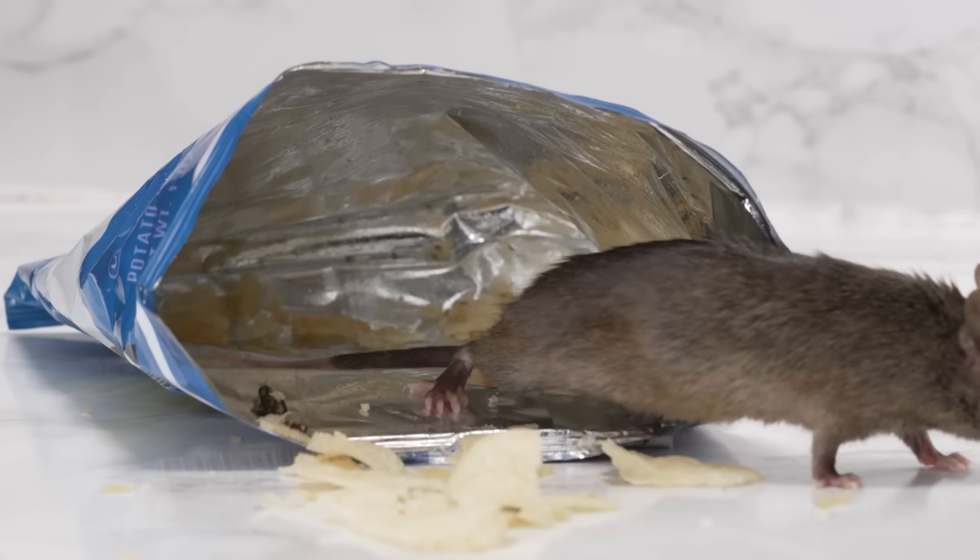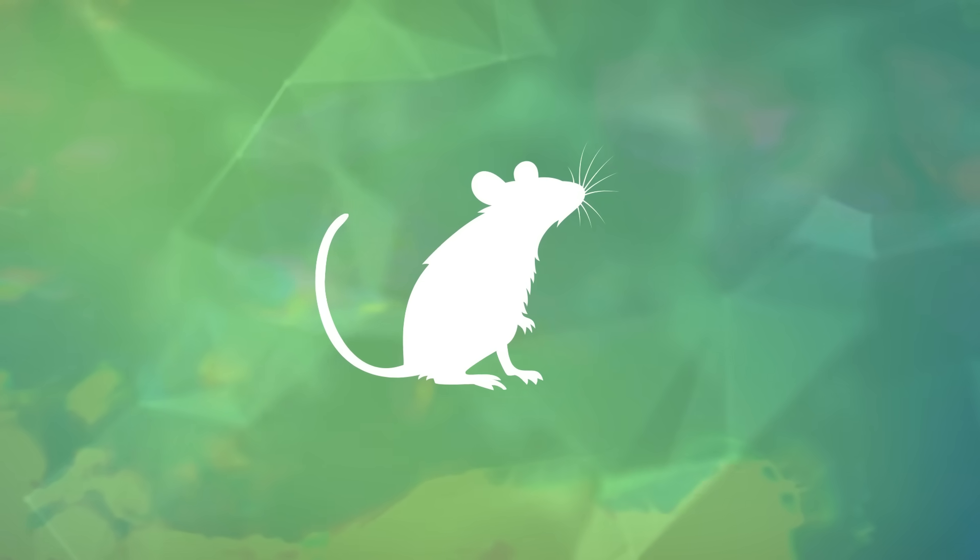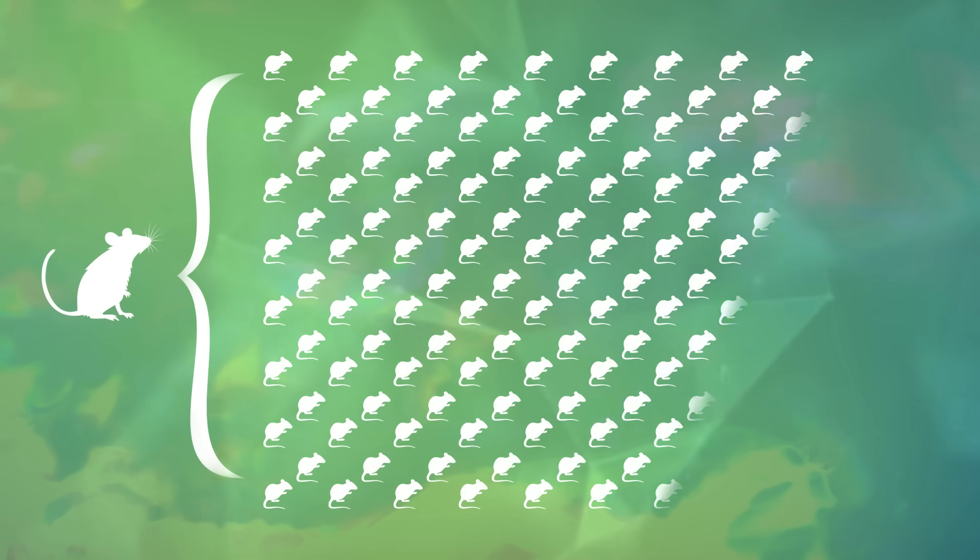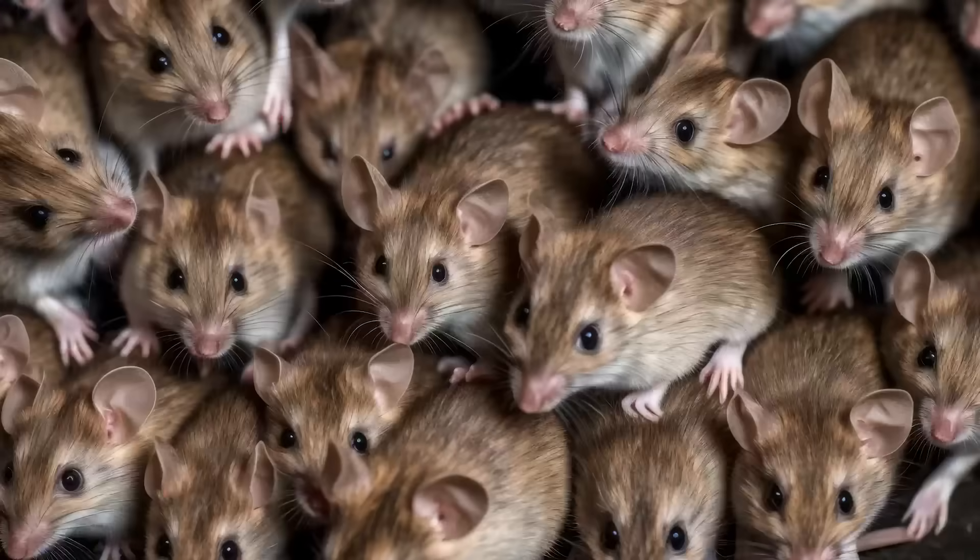House mice are known to produce 40 to 100 droppings in a single day. That's pretty gross. When you think about how a single female mouse can have up to 150 offspring in a year, you can picture just how quickly a mouse infestation can get out of hand.